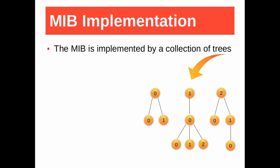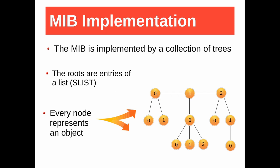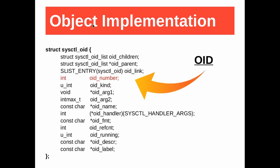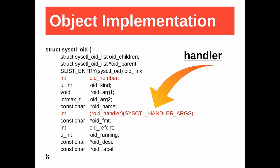The MIB is implemented by a collection of trees. Every node is an entry of a simple list, and every node represents an object. So an object is implemented as a node of a tree. This is the definition of a node — it is in sysctl.h. Here you read the number of an object ID. sysctl is implemented in the kernel, specifically in kern_sysctl.c. sysctl visits the MIB to find an object by its OID, then calls its handler. Finally, the handler can read from or write to the buffer. Here you can read the handler in the definition of a sysctl node.